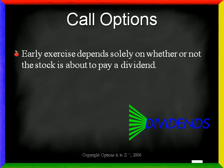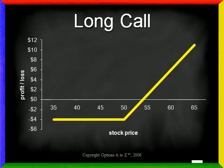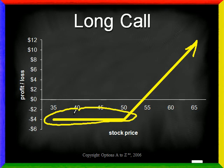For call options, the decision to exercise early depends solely on whether or not the stock is about to pay a dividend. If the underlying stock pays no dividends, do not exercise your call option early — it is never in your best interest to exercise a call early if there are no dividends involved. The reason is that the profit and loss diagram for a long call looks like a hockey-stick-shaped profile. You can see that you have unlimited profit potential if the stock price rises, but limited losses if the stock price falls. However, if you exercise your call, you give up your call option to take delivery of the stock, and that means you lose this limited downside protection.